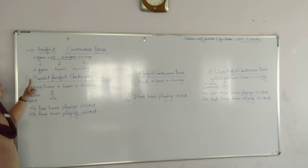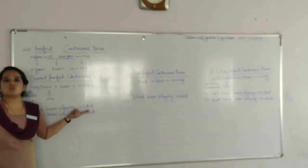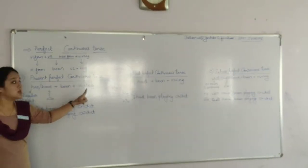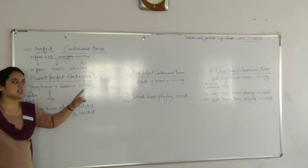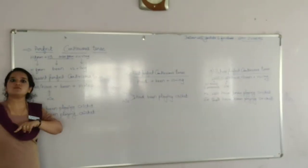The first tense, present perfect continuous tense. This will be the combination of two again. Like, has or have been plus V1 plus ING. So here, has with the singular subject, as we have seen earlier.